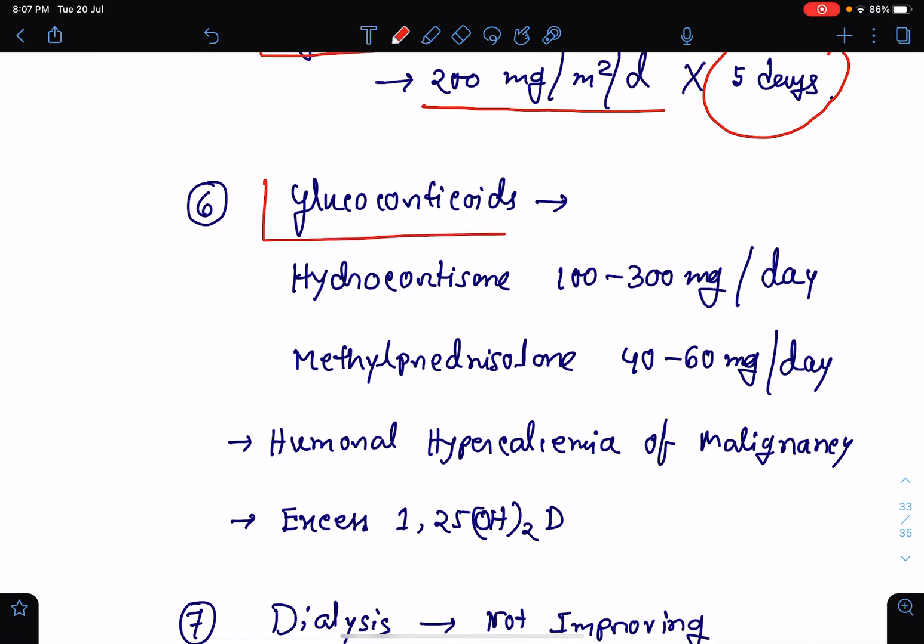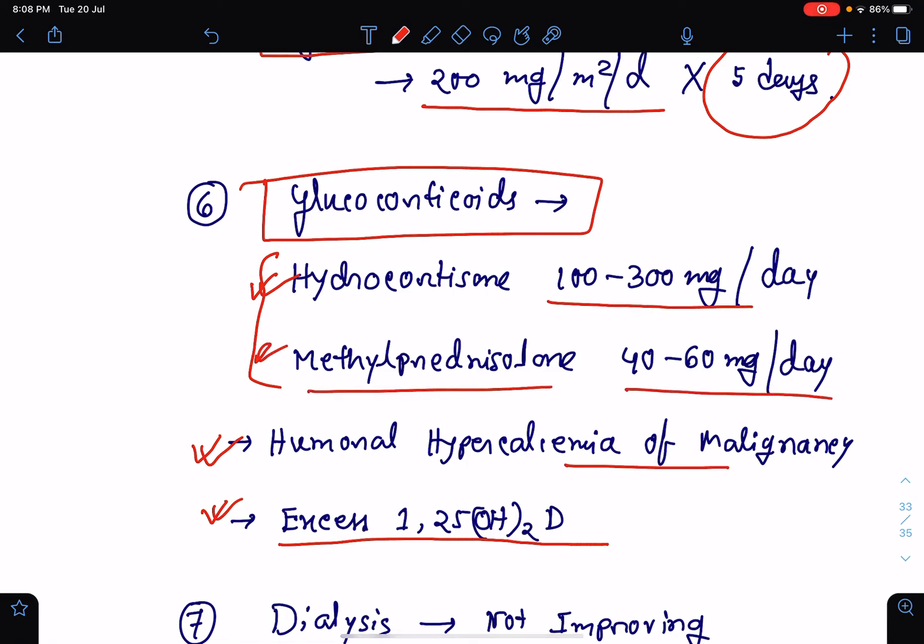We can also use glucocorticoid for the treatment of hypercalcemia. Basically, it is used for humoral hypercalcemia of malignancy or in cases of excess 1,25-dihydroxyvitamin D level. We can use hydrocortisone at a dose of 100 to 300 mg per day or methylprednisolone at a dose of 40 to 60 mg per day.